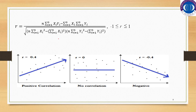The formula to calculate the Pearson correlation coefficient r is: r equals n times the summation of xy minus the summation of x times the summation of y, all divided by the square root of [n times summation of x-squared minus (summation of x) squared] times [n times summation of y-squared minus (summation of y) squared]. The range of r is from -1 to 1. If r equals 0, there is no correlation — as seen in the scatter plot where there is no trend.